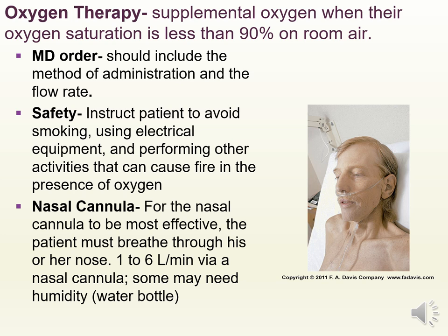These patients will likely need supplemental oxygen, especially if the O2 sat is less than 90% on room air. Be sure the MD order includes the rate and method of administration. Teach the patient about safety — avoid smoking or using electrical equipment that may cause a spark or fire in the presence of oxygen. For a nasal cannula to be effective, the patient must be able to breathe through their nose. One to six liters per minute is generally administered. Higher flow rates may dry the nose and lead to nasal cavity breakdown, so some patients may need humidified oxygen.